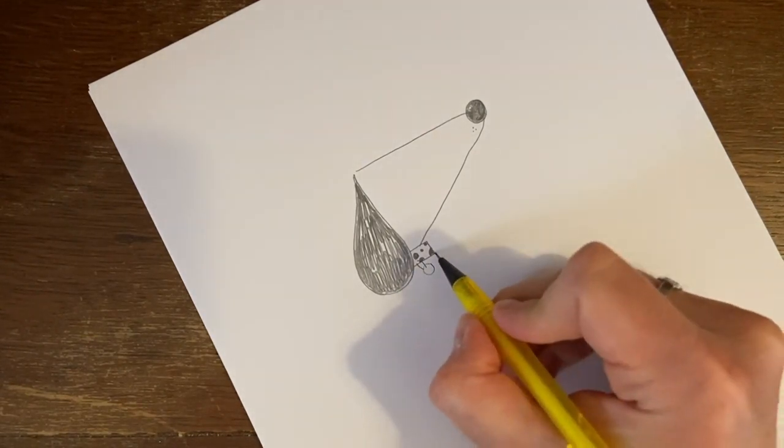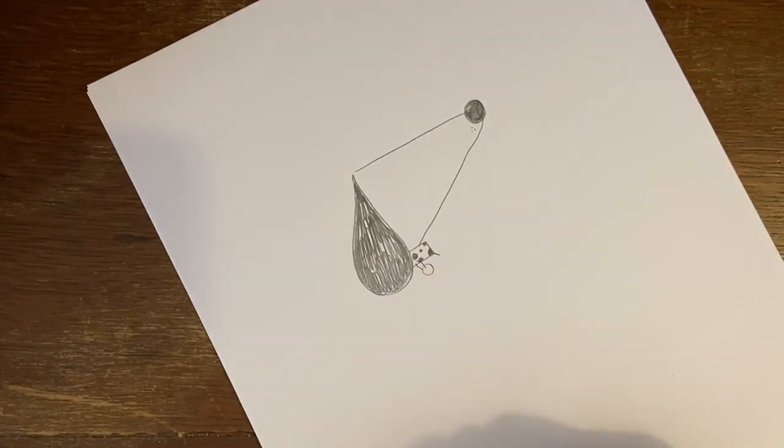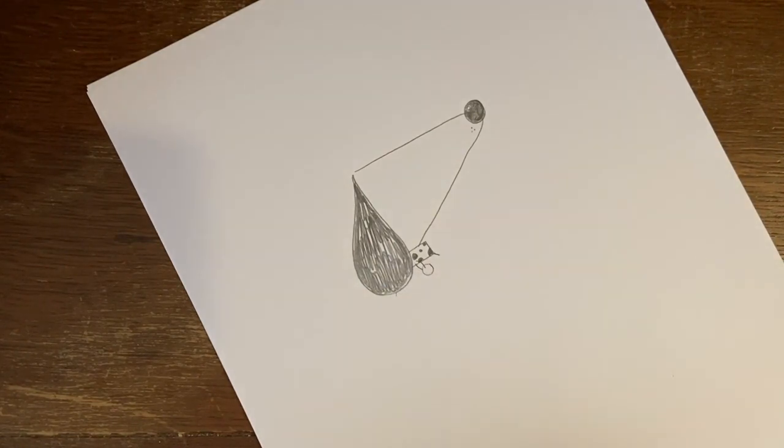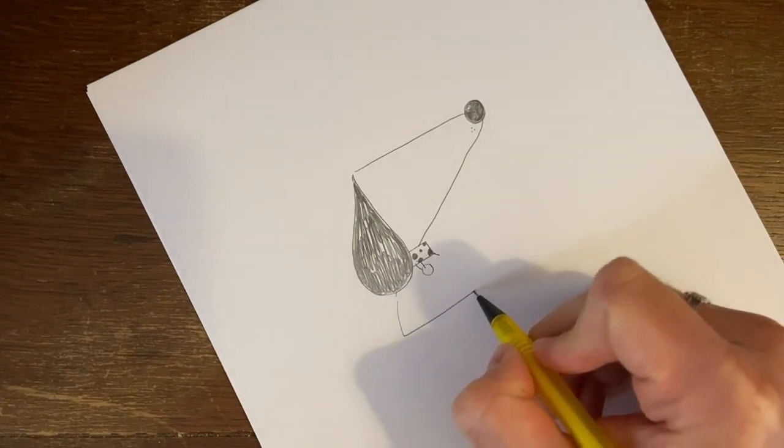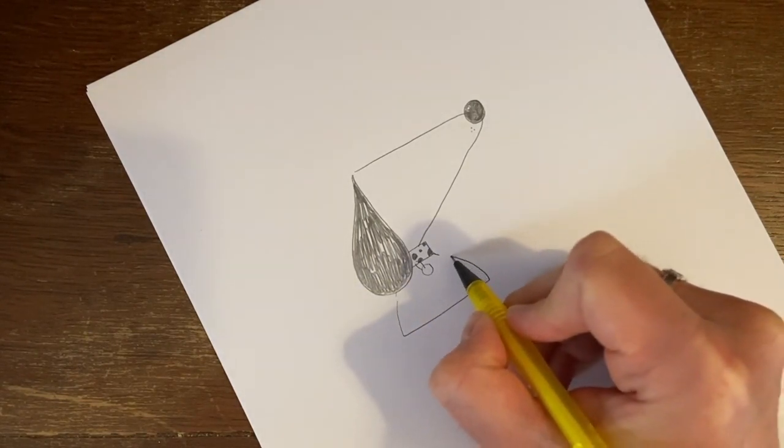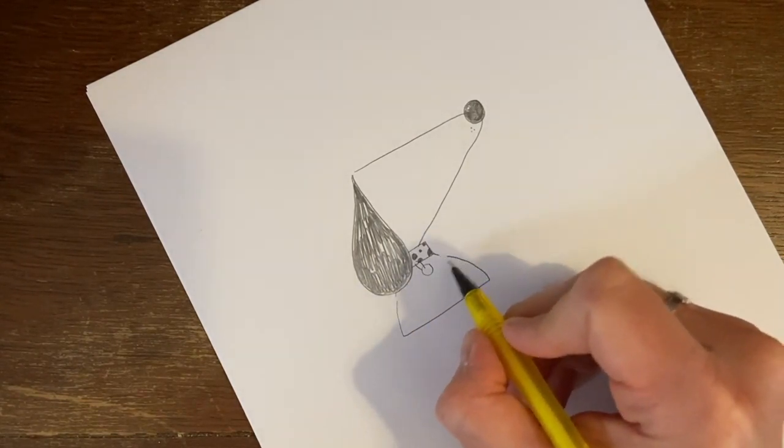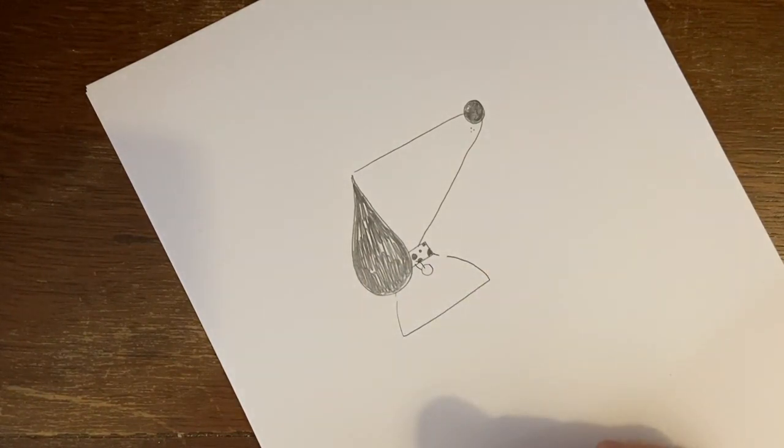Now we need to draw his body. So we're going to start by doing a little line there and a little line there. And then we're going to leave a tiny gap and we're going to go down and across and almost, but not quite, all the way up. Do you see how I've left two gaps there? And these are for his arms.